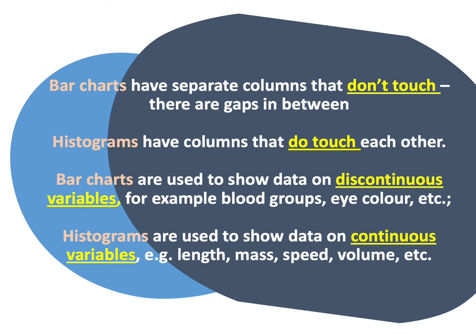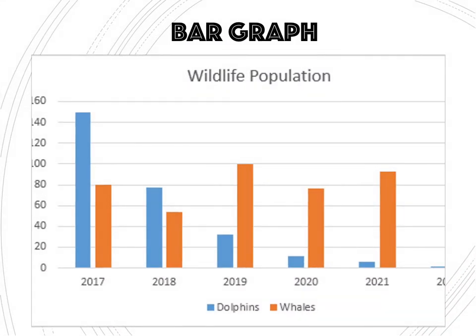Here is an example of a bar graph. As you can see, there is an equal gap between each bar. The x-axis represents the manipulated variables and y-axis the responding variables. If you are given two different sets of data to plot, do not shade or color the graph. Instead, label the data clearly at the axis to differentiate the two datasets. Always write the title on top of the bar graph.